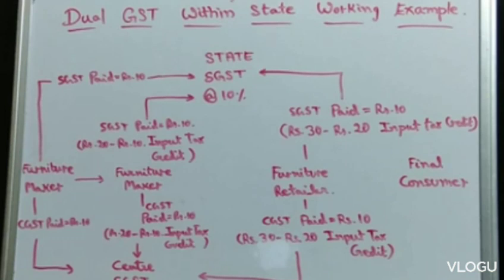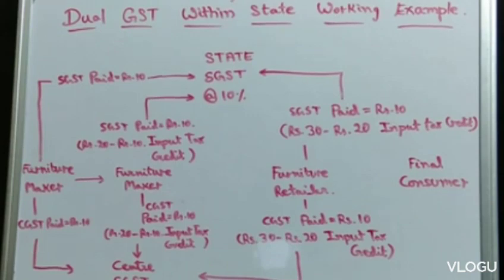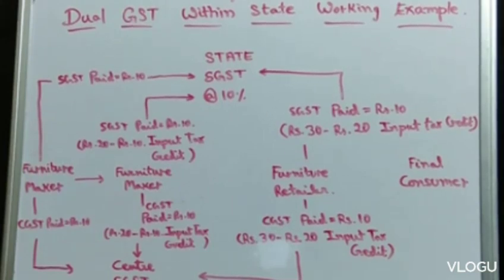Here is an example for furniture making. You can see the furniture maker, retailer, and consumer. Tax invoice A is applied for the furniture maker, invoice B for the retailer, and invoice C for the final consumer. As furniture maker, SGST paid is 10 rupees as input tax credit, and CGST will be 10 rupees.